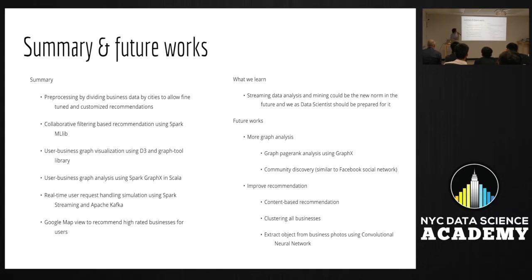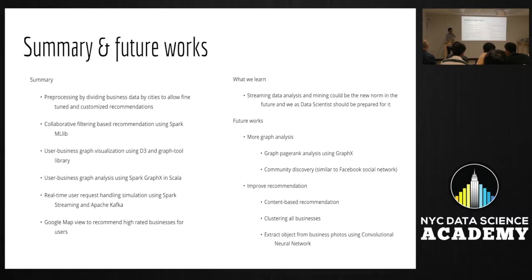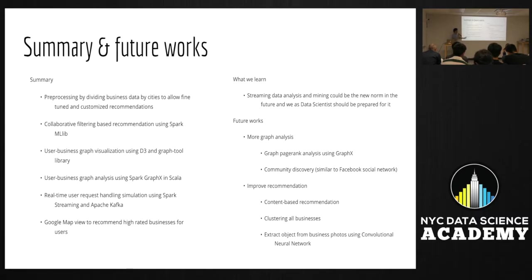To sum up, the most important thing to remember is that we divide everything into chunks — we chunk the data and then tackle and conquer each piece individually. We build the recommendation system using Spark MLlib, use user-based graph visualization with D3 and graph-tool in Python, use GraphX to generate components, use Spark Streaming for real-time request handling simulation, and use Flask, CherryPy, and Python Paste to handle user requests, plus the Google Maps API.